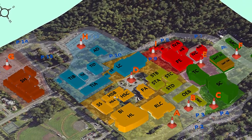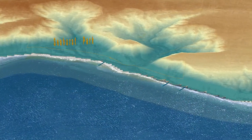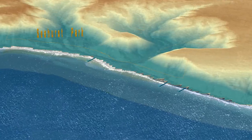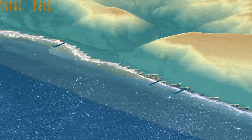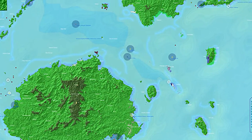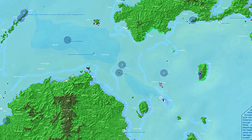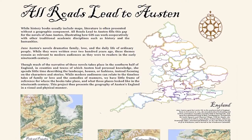You will see a variety of projects. For example, predicted sea level in Seattle City, or you will find some others like all roads lead to Austin.